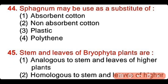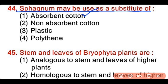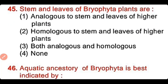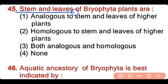Question number 44: Sphagnum may be used as a substitute of absorbent cotton, non-absorbent cotton, plastic, or polythene. The correct answer is option 1. Sphagnum mosses can be used as a substitute for absorbent cotton. Question number 45: The stem and leaves of bryophyte plants are analogous to, homologous to, both analogous and homologous to, or none of the above compared to higher plants. The correct answer is option 1. The stem and leaves of bryophytes are analogous to the stem and leaves of higher plants because they have a similar function.